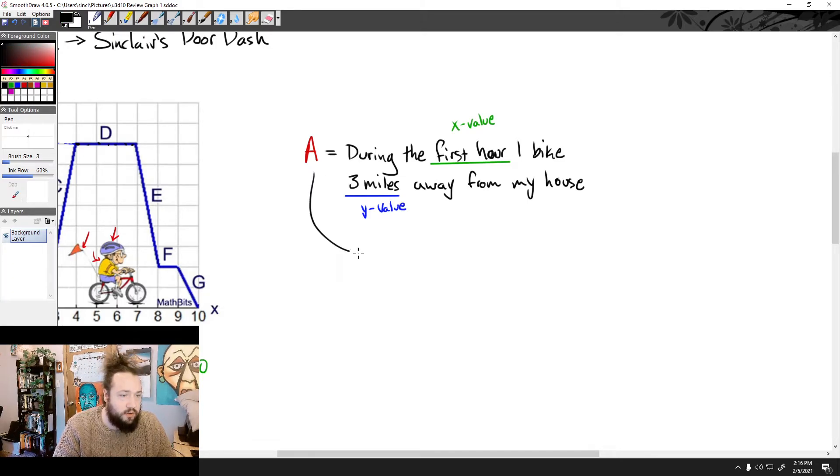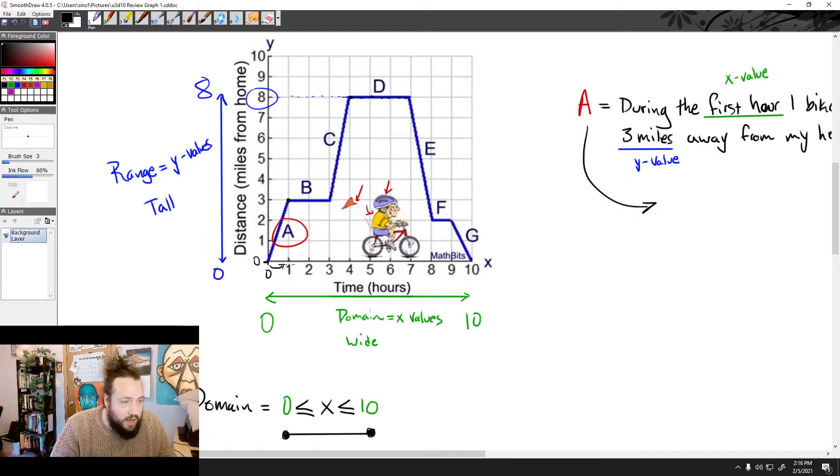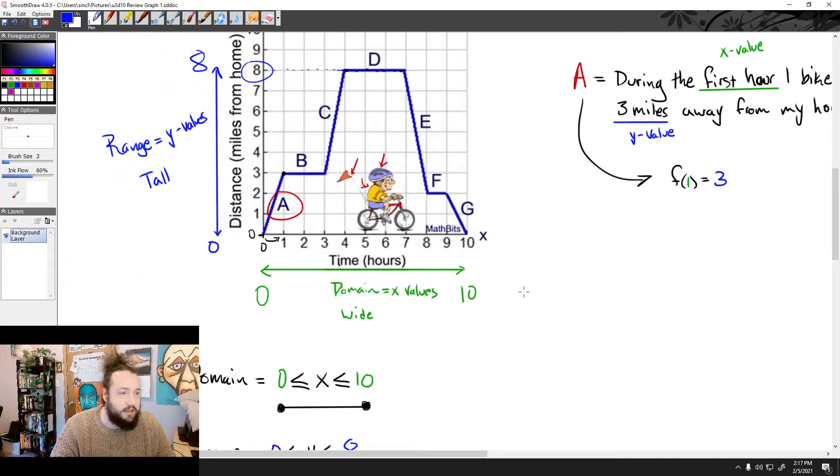Now, if I want to do some function notation for this one, we could say a couple things. We could say, like, during F of 0 or F of 1 equals 3. So I could say some stuff like this. I could say, I know that F of 1 equals 3. Because I can see this point on the graph. I can see this point right here. If I wanted to estimate some, I could even estimate what half an hour gets me. So half an hour would be right here. And that would be up here at, it looks like, a mile and a half.